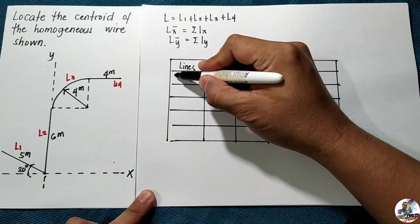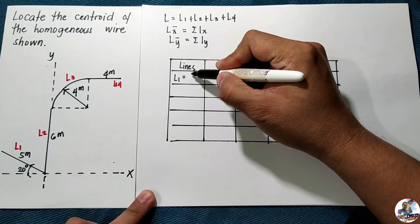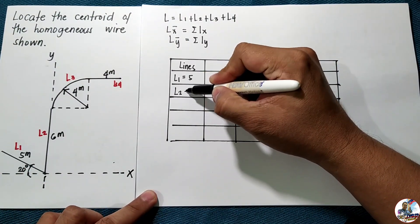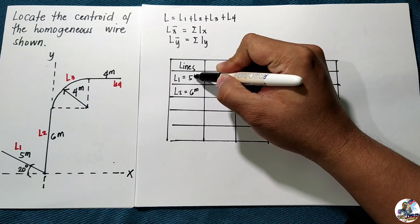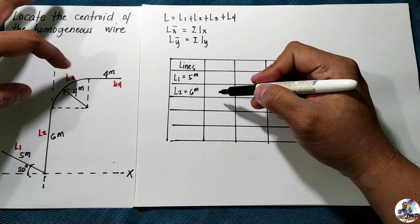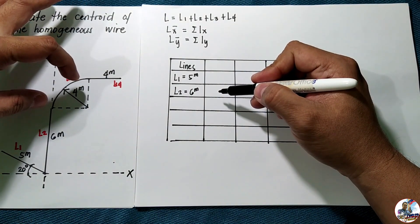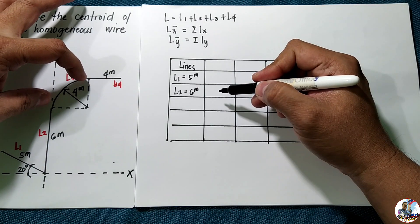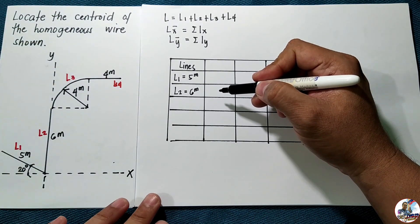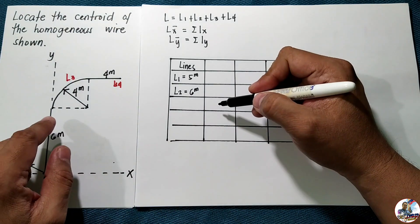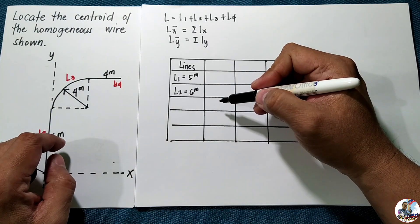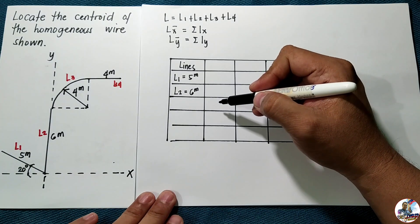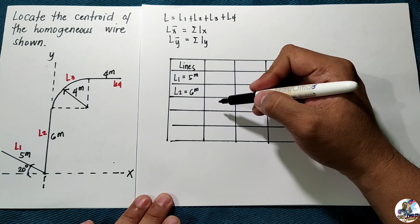For L1, the length is five meters. For L2, the length is six meters. For L3, which is a segment of an arc — specifically a quarter of a circle's circumference — the circumference of a full circle is two pi r, so one quarter of that is one-half pi r.